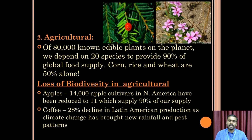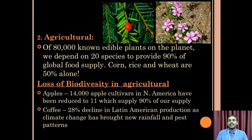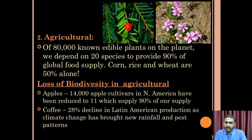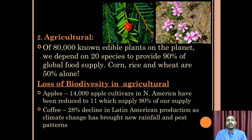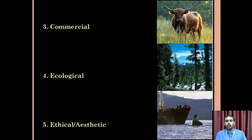There is also loss of biodiversity in agriculture. For example, 14,000 apple cultivars in North America have been reduced to just 11, with only a few supplying 90% of production. Coffee has seen a 20% decline in Latin American production as climate change has brought new rainfall and pest patterns to coffee-growing regions.